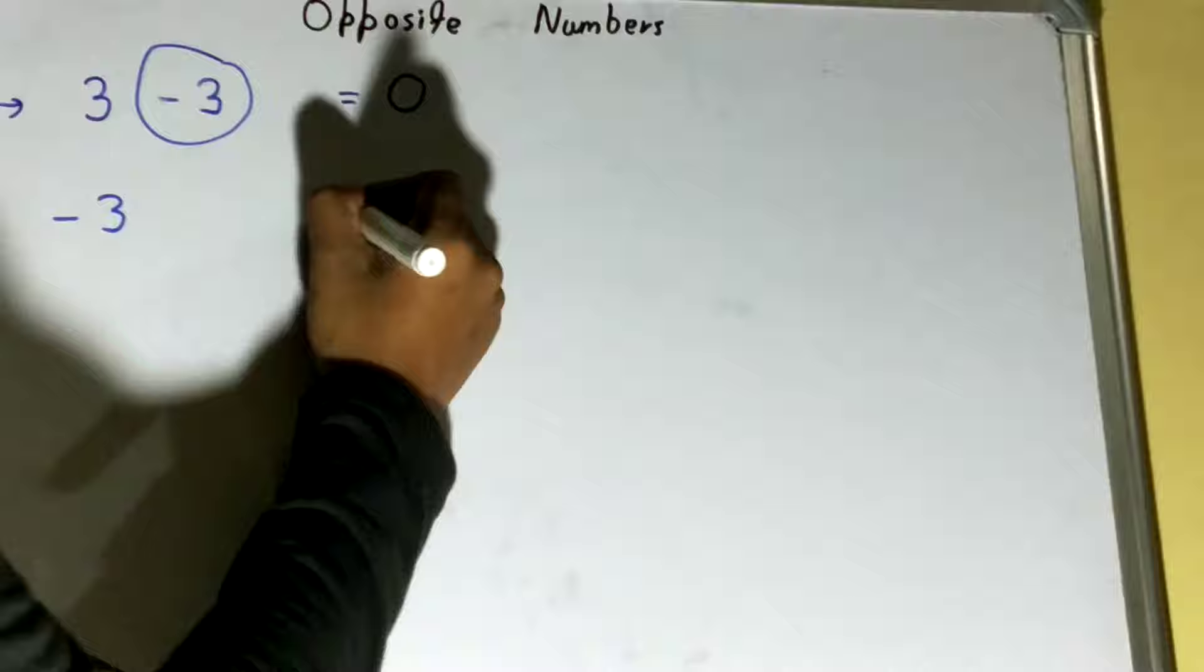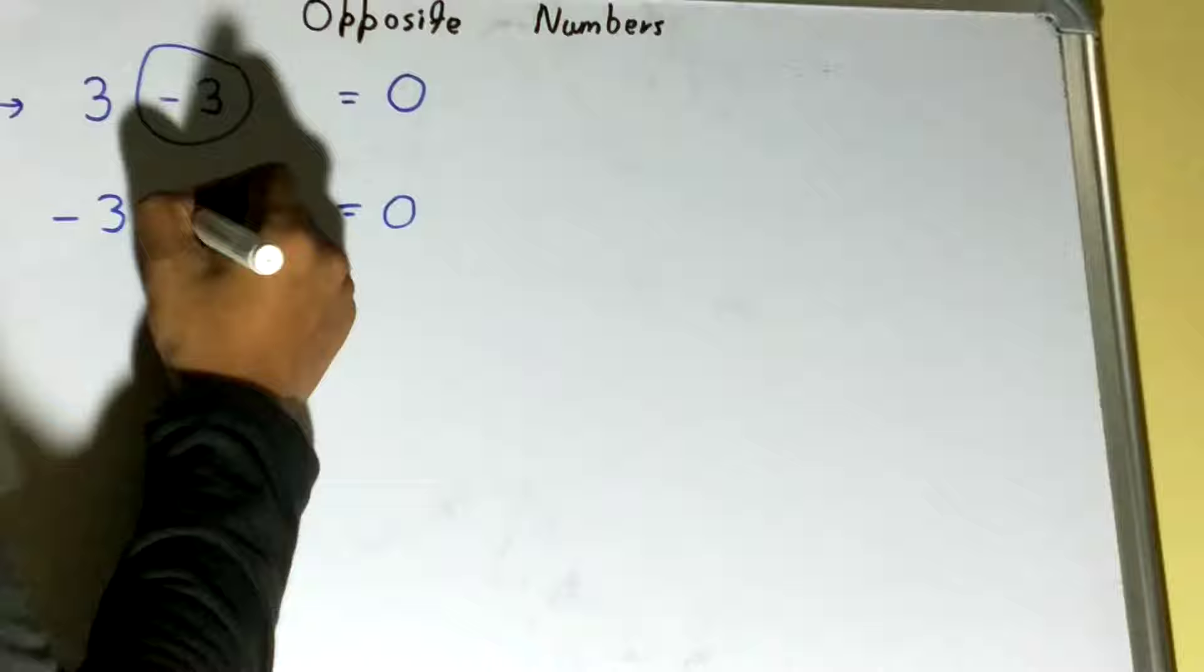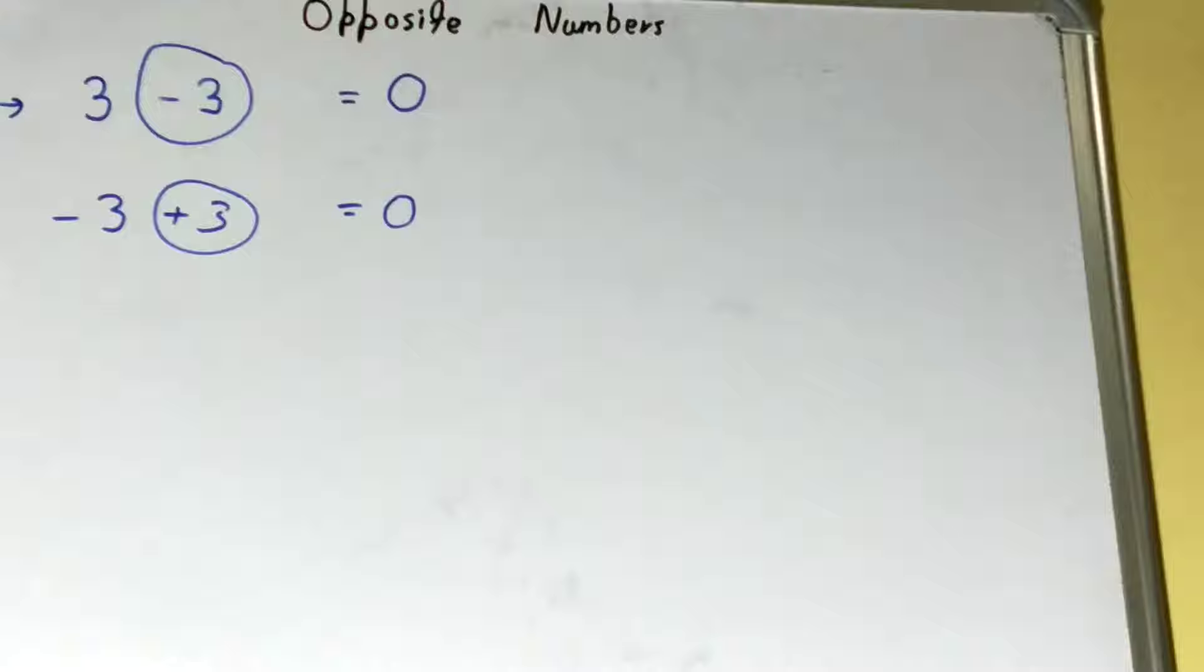Similarly, if we take the opposite, like if we take negative 3 as a number, so by what way, by addition or subtraction, we can get 0? By adding 3 we can get 0. So basically, the opposite number of negative 3 will be positive 3.